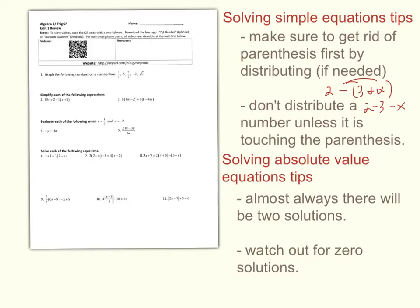The second set of tips involves absolute value equations. Almost always there will be 2 solutions. But you've also got to watch out for zero solutions — sometimes an equation involving absolute value will have no solutions. That's because the absolute value of something has to be positive. So if you see the absolute value of x equals negative 5, that simply can't happen, because the absolute value needs to be positive.